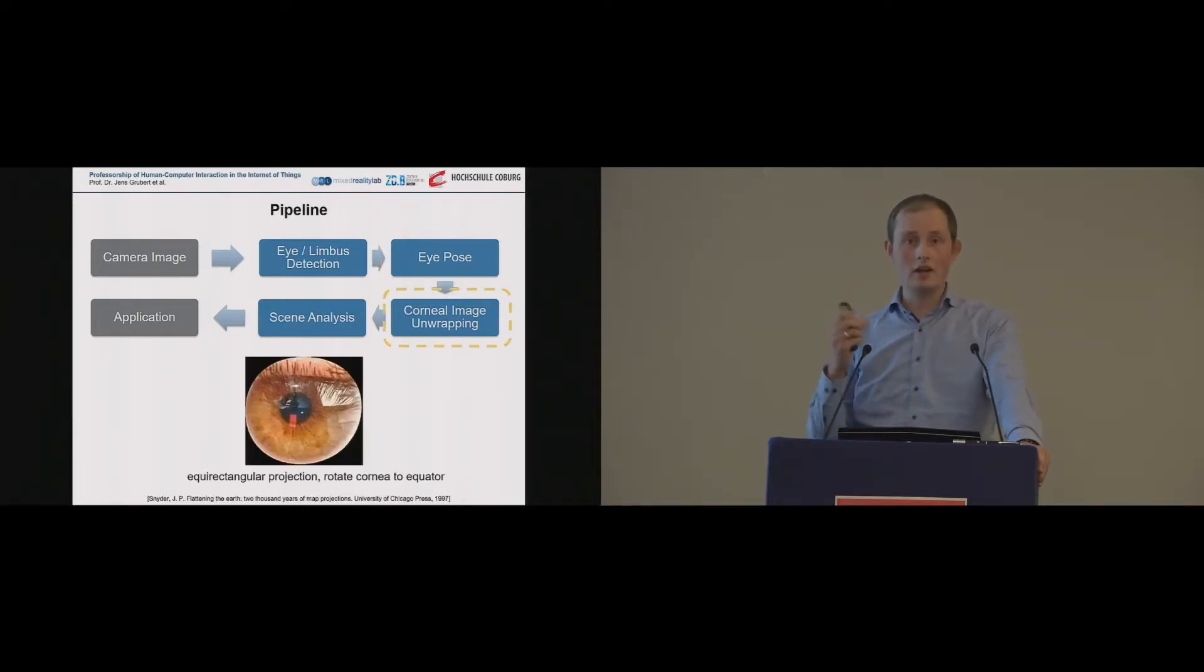And once we have that eye pose, we can now unwrap the corneal image. That means we actually map it to a flat surface, similar as you would map a globe to a flat surface. In this case, using certain projections, actually a rectangular projection. And in this case, we basically just have to take care that we avoid large distortions in certain areas of the eye, and hence we need to rotate that eye model a little bit. But the details for this are in the paper. And basically, at this step, you have a low-resolution, very blurry virtual camera image from your eye.